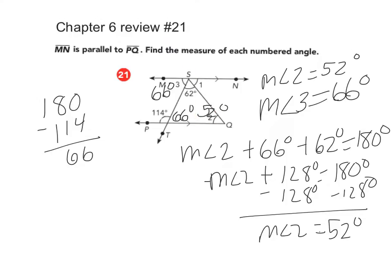So if the measure of angle 2 is 52 degrees, then the measure of angle 1 is also 52 degrees.